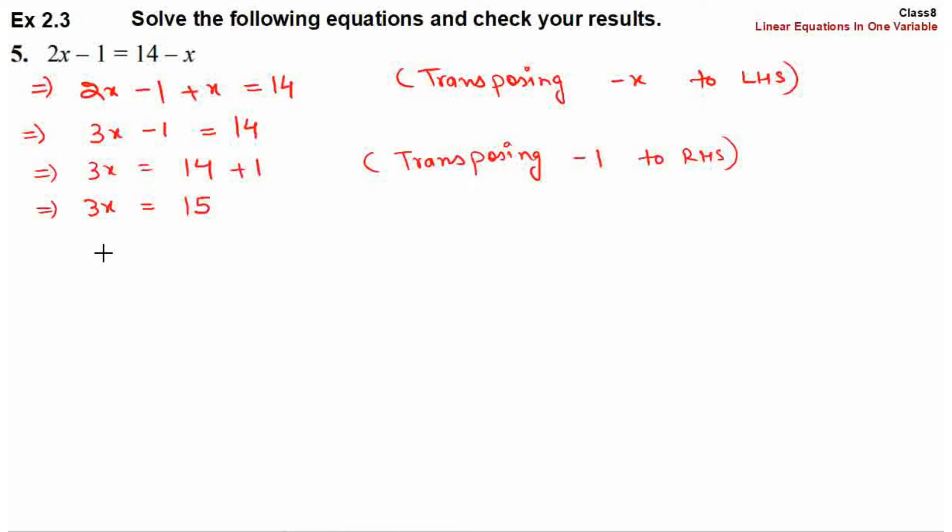Now we have to find x's value. This implies x equals 15 upon 3. The 3 is in the numerator on the left hand side. When it goes to the right hand side, it goes to the denominator. So 3x equals 15, therefore x equals 5. This is the answer.